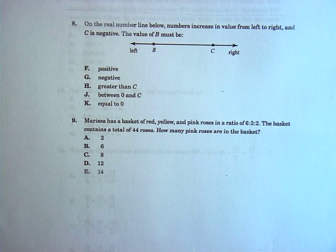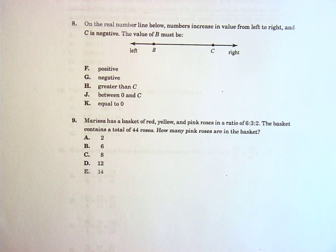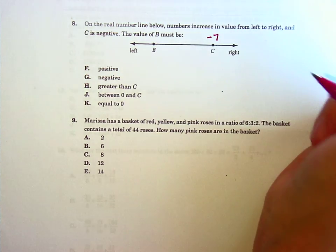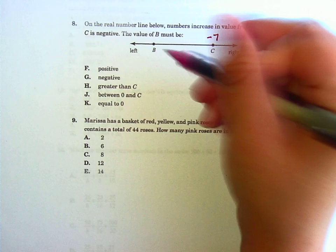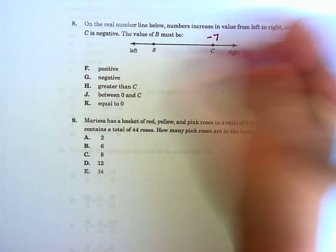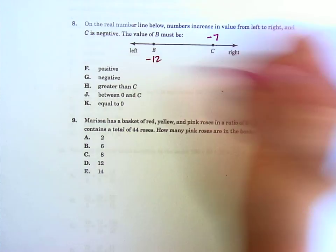On the real number line below, numbers increase in value from left to right, and C is negative. Okay, so this one's already, let's just make it up. Let's say it's negative 7. Then what must the value of B be? Well, let's see. It can't be negative 7. It has to be lower than negative 7.